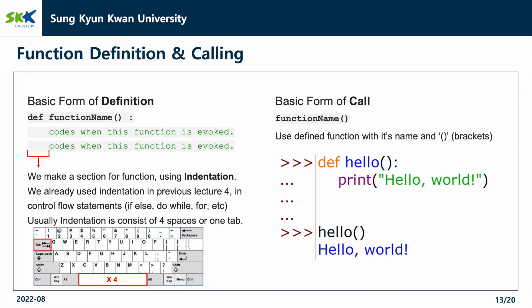First, let's look at the basic form of function definition. Write the name of the function you want to declare after def and add the colon. Then write the contents of the function. At this time, we make a section for the function using indentation. We already used indentation in previous lecture 4 in control flow statements. Usually, indentation consists of four spaces or one tab.